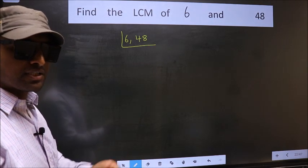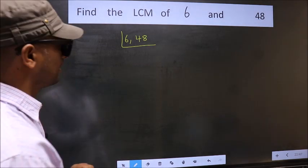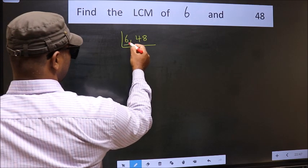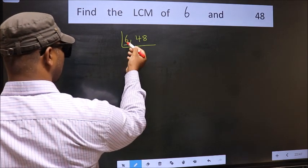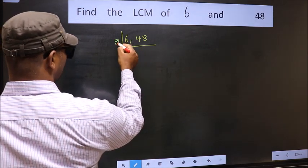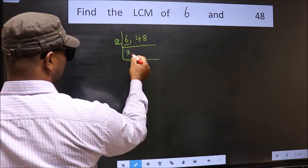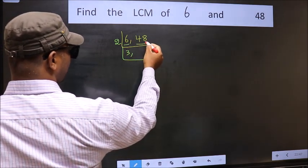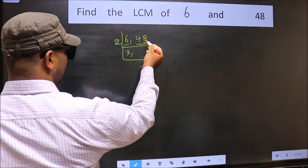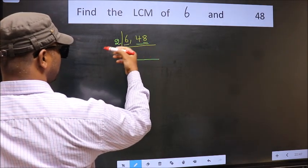Now focus on the first number which is 6. 6 is an even number so we take 2. When do we get 6 in the 2 table? 2 times 3 is 6. Now the other number 48, last digit 8, even. So this number is divisible by 2.